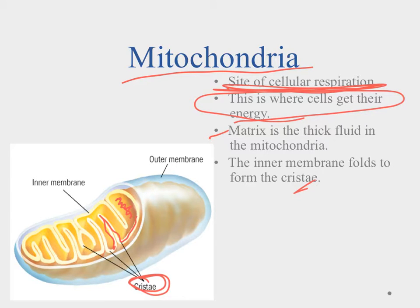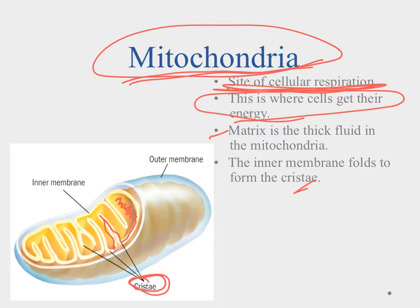One last thing about the mitochondria: because it is where cells get their energy, we can find the mitochondria in just about every organism's cell. This is how they get their energy to perform the processes that the cells need to keep the organism alive.